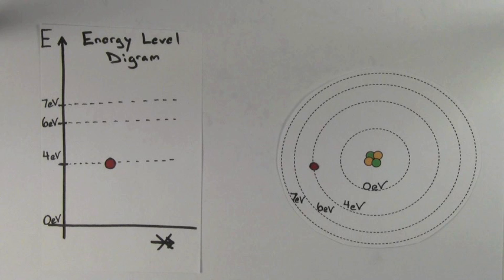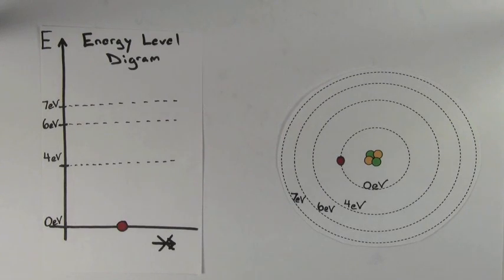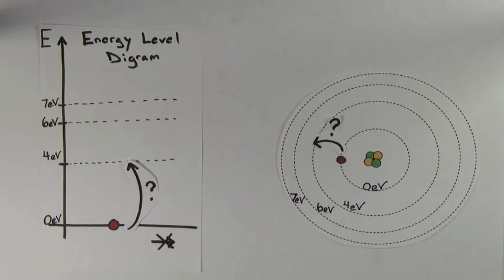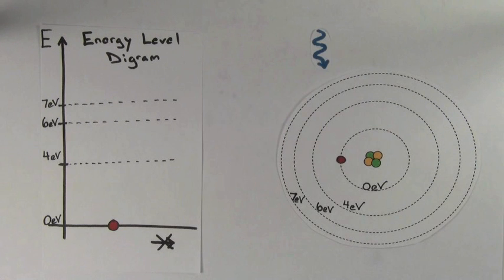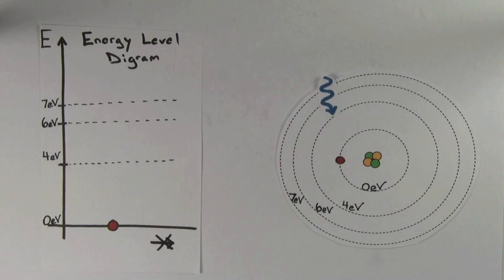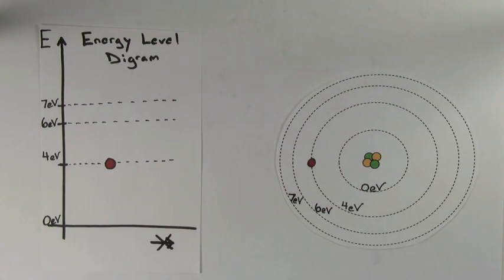Let's say our electron starts off on the 0 eV energy level. The lowest energy level an electron can have in an atom is called the ground state. So how could our electron get from the ground state to any of the higher energy levels? For the electron to get to a higher energy level, we've got to give it more energy. We know how to do that — you just shoot light at it. If a photon of the right energy can strike an electron, the electron will absorb all the photon's energy and jump to a higher energy level.